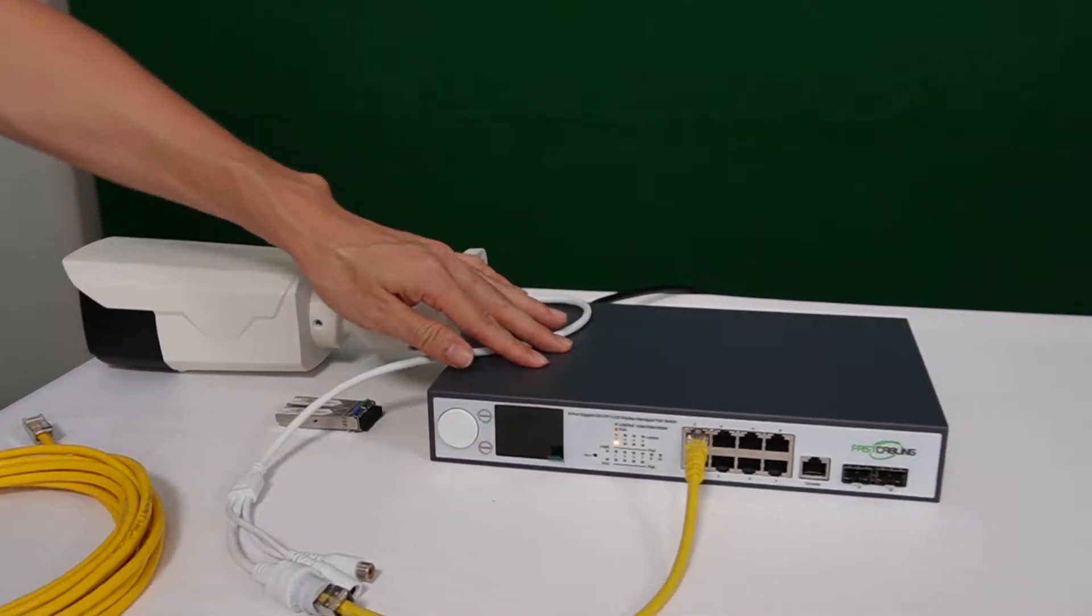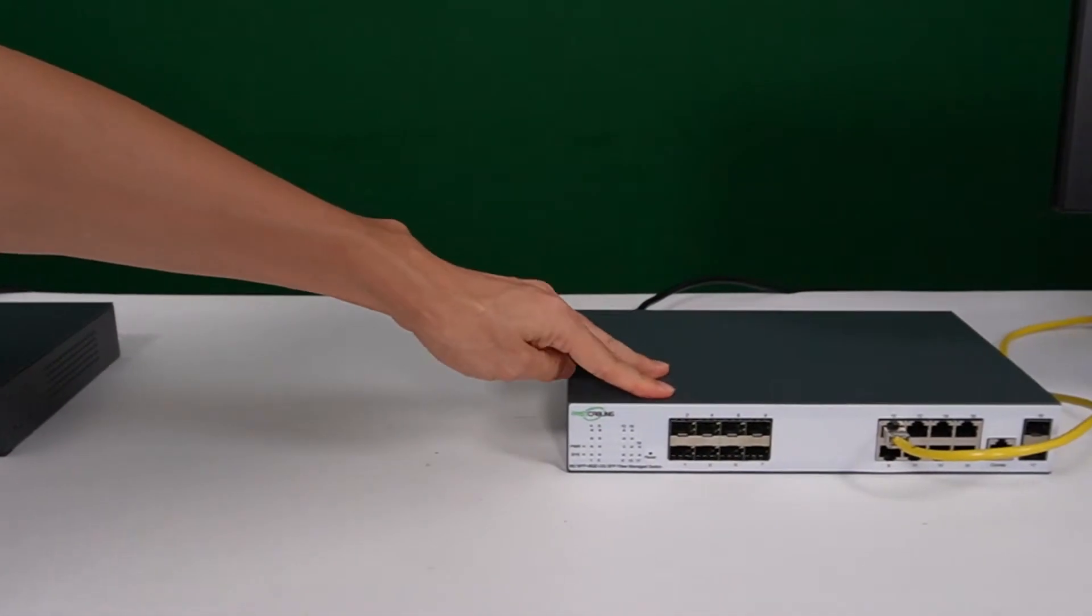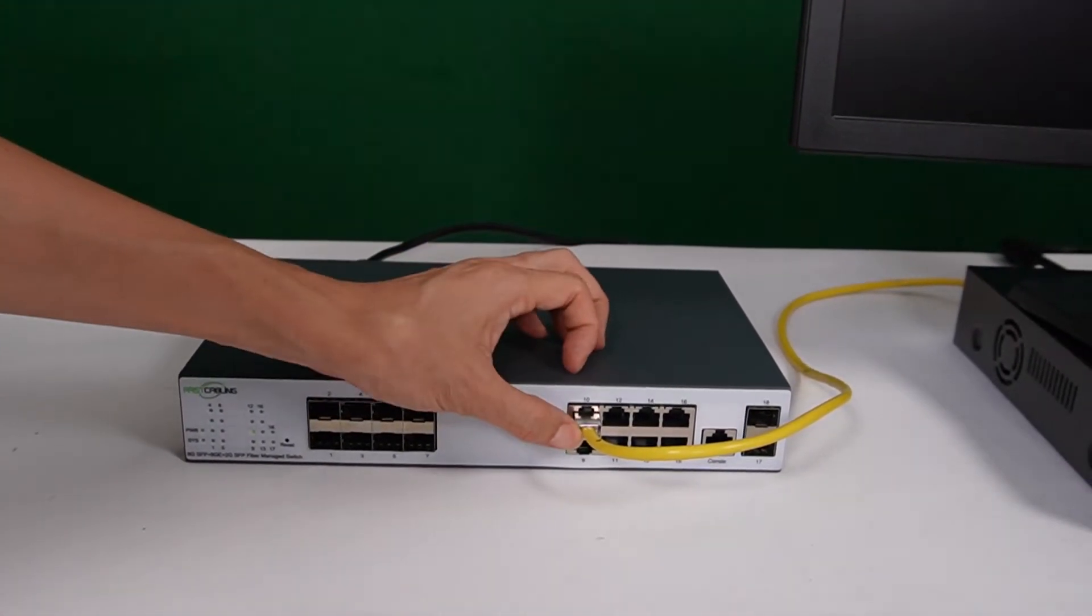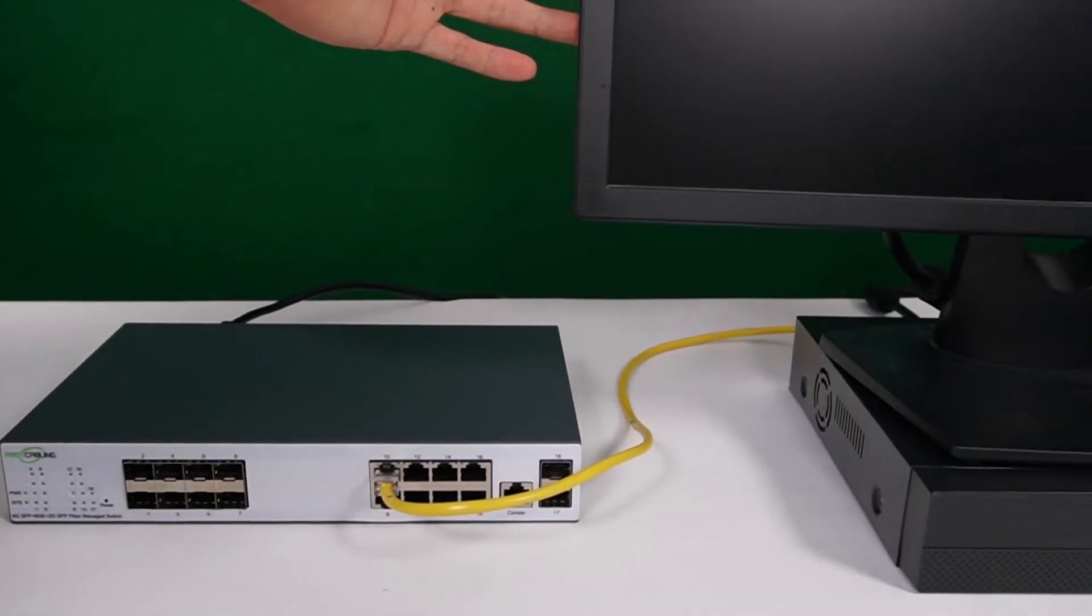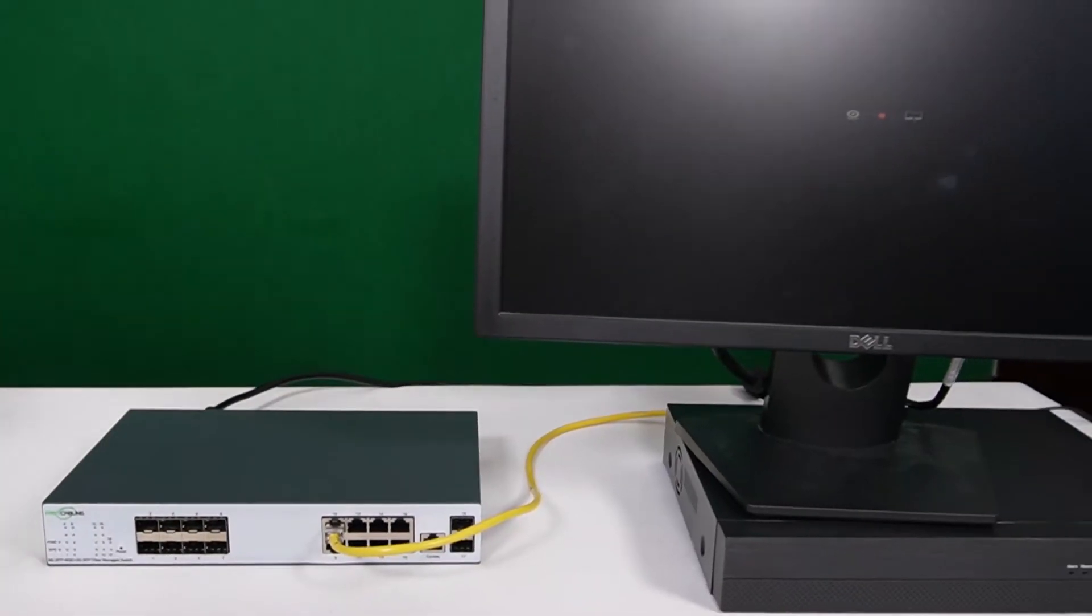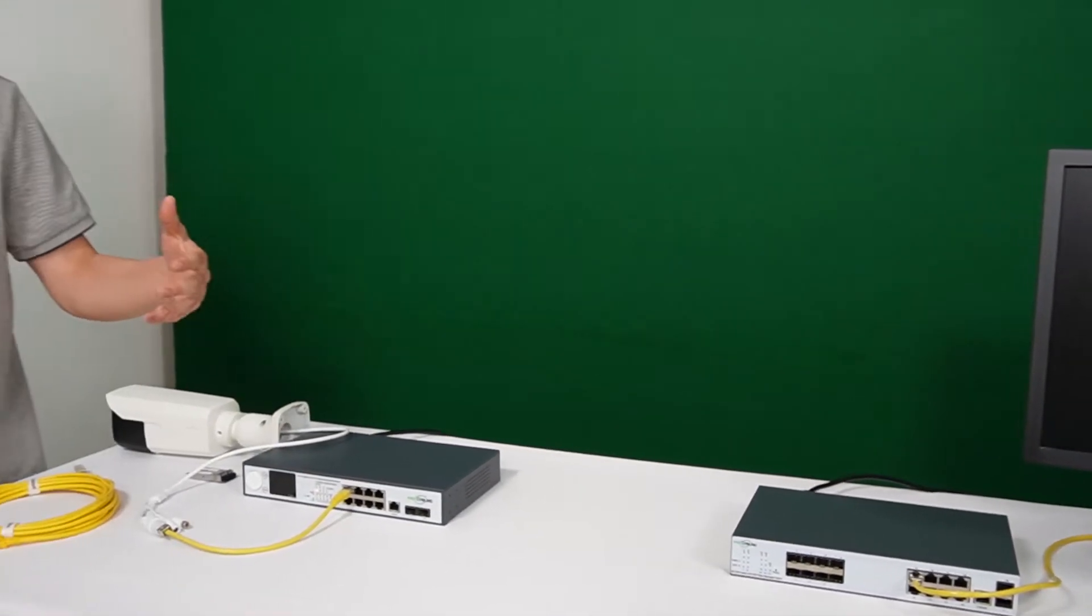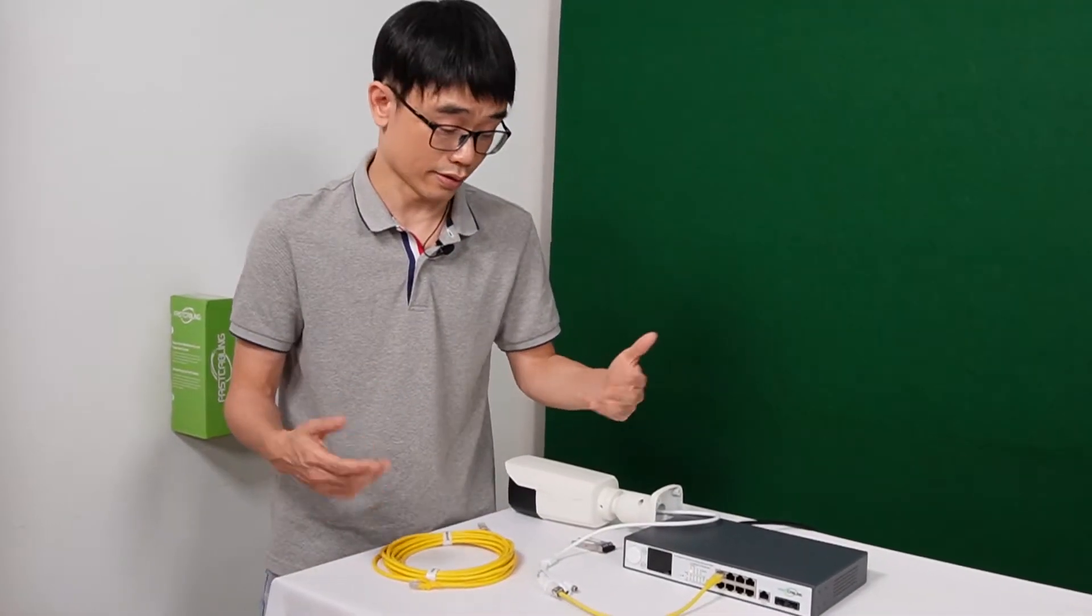Now let's move to the first switch. This first switch comes with some SFP slots and also some RJ45 network ports. One of the ports has a cable coming from the network video recorder. So if these two switches are working together correctly, we're supposed to see the live video from this camera on the monitor. That's the way we can verify they're working correctly.